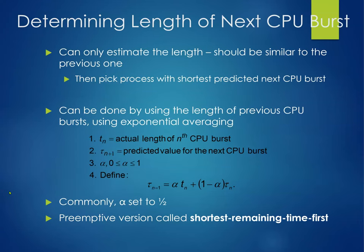How do we determine the length of the next CPU burst? We can only estimate the length — it should be similar to the previous one. We pick the process with the shortest predicted next CPU burst. This can be done using exponential averaging, where τ(n+1) = α·t(n) + (1-α)·τ(n), with α commonly set to 1/2. The preemptive version is called shortest remaining time first.